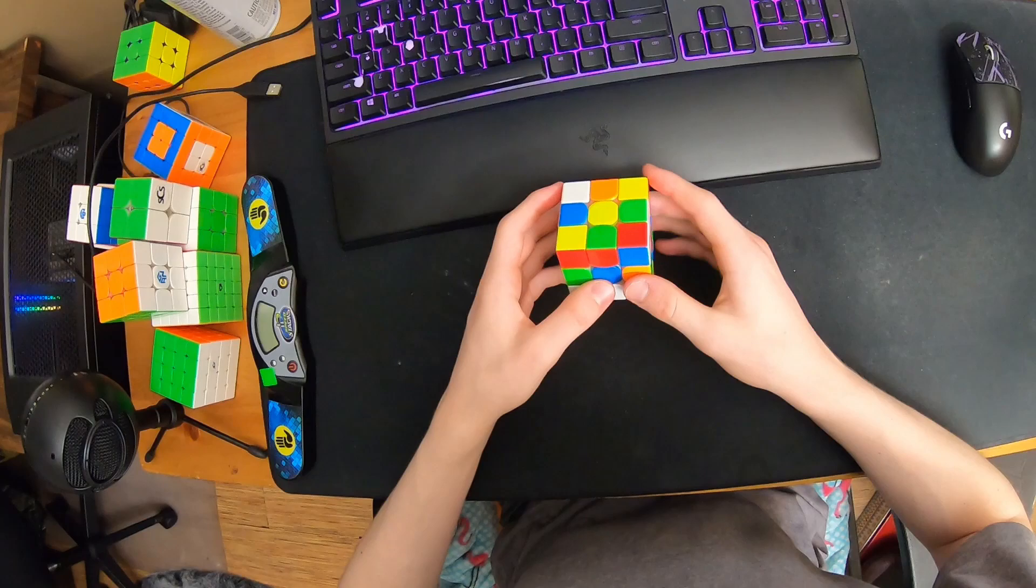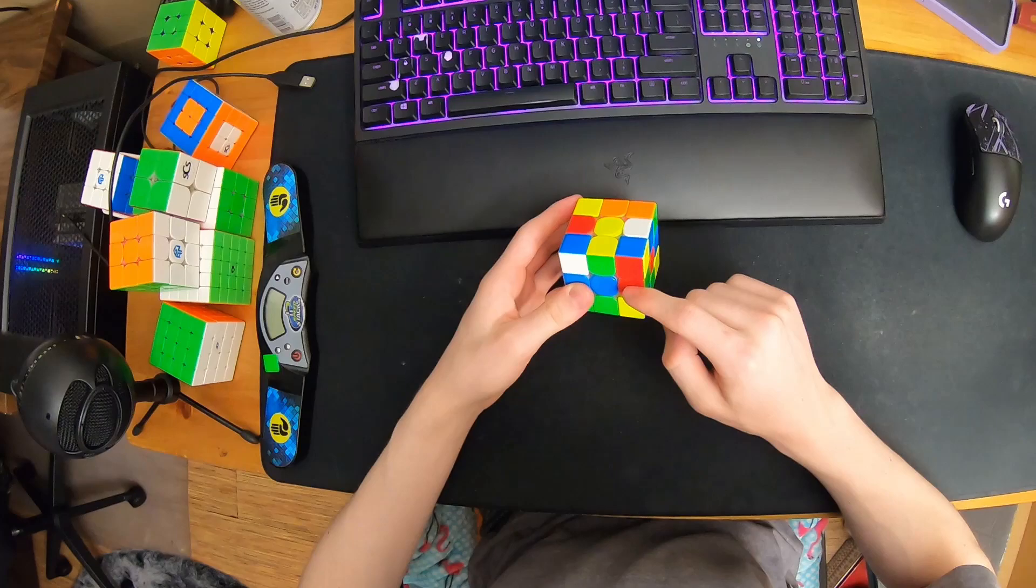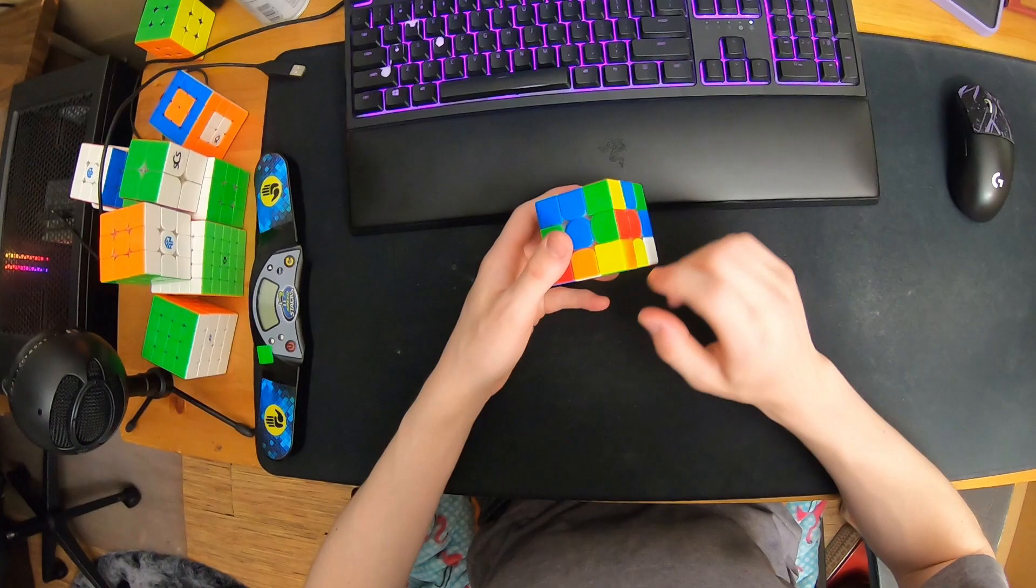I can do three moves R prime F L and I insert like this square kind of, and then the edge to that is here. This looks bad, but just do a D prime here and then R U R prime F to insert this.